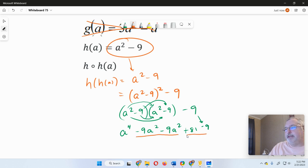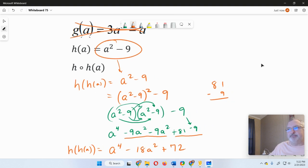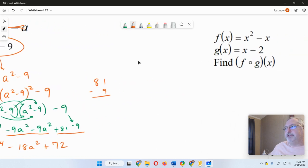And then we'll just simplify. Those two will combine together. Those two will combine together. So we'll end up with a to the fourth minus 18a squared. And then 81 minus 9 is 72, so plus 72. And there again, that's the final answer. So all of these will look like expressions somehow, and simplifying is probably going to be the hardest part for most of these.